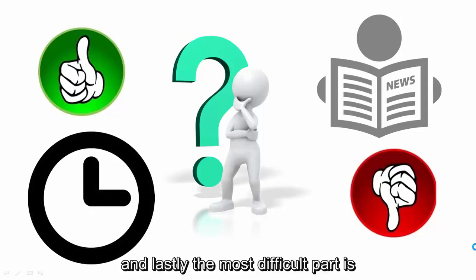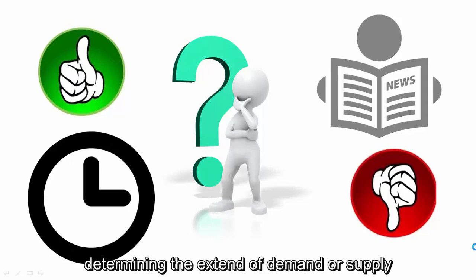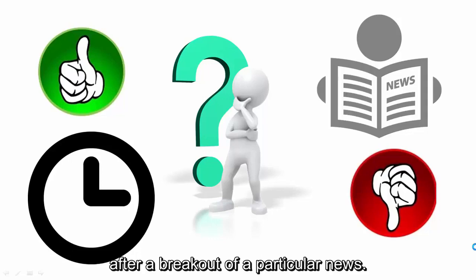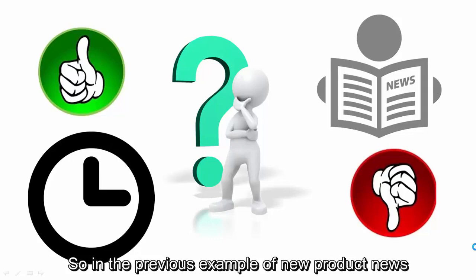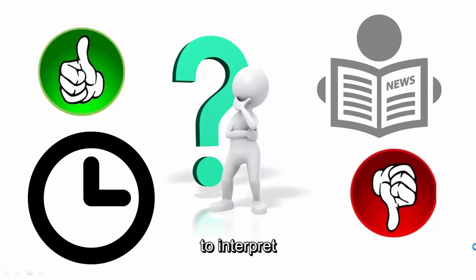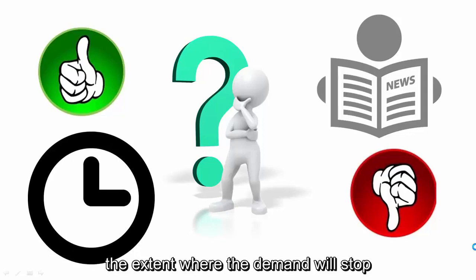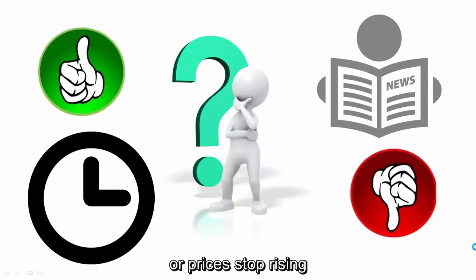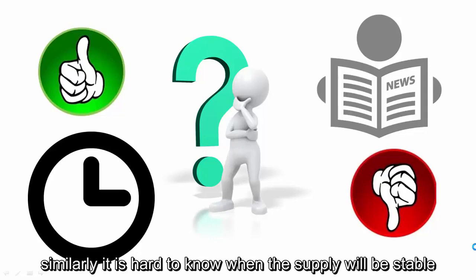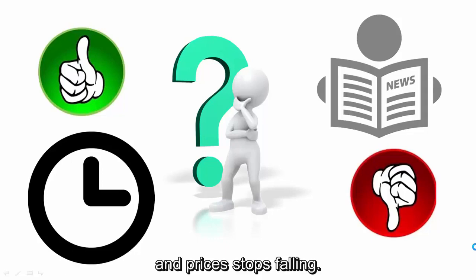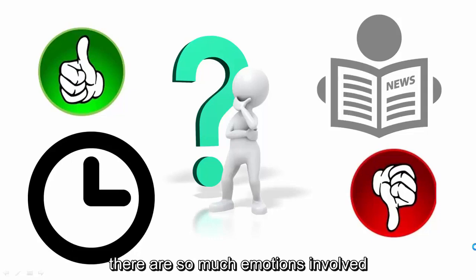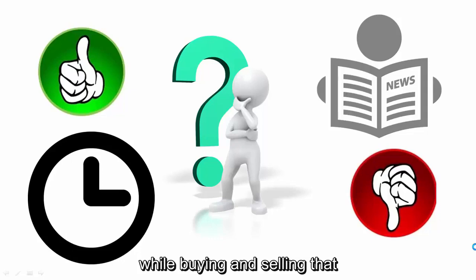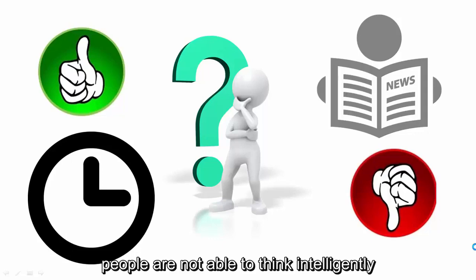The most difficult part is determining the extent of demand or supply following a particular news breakout. In the medicine example, it's really hard to interpret how far demand will go or when prices will stop rising — and similarly, when supply will stabilize and prices will stop falling. This is because people don't invest in the market rationally; there are so many emotions involved in buying and selling that people are not able to think intelligently.